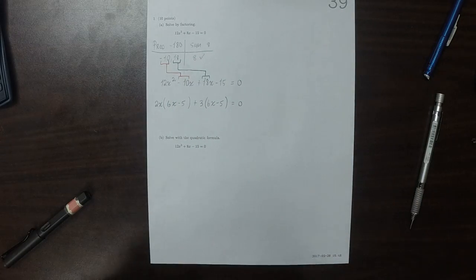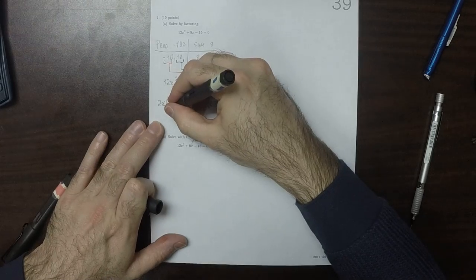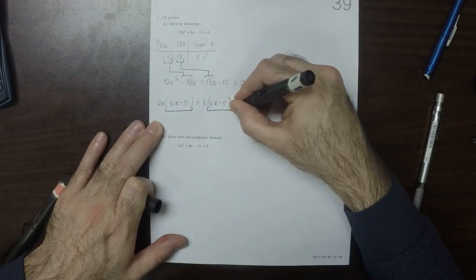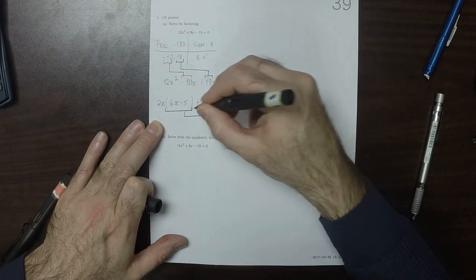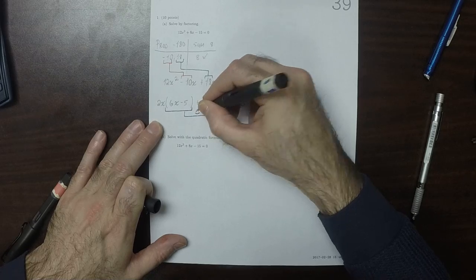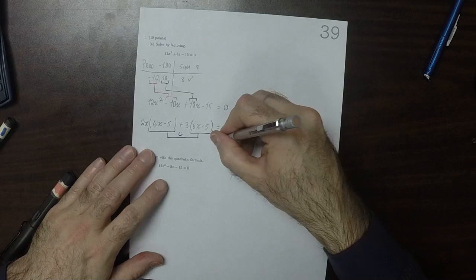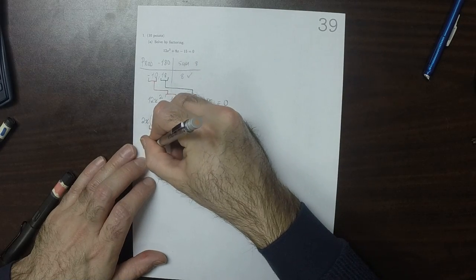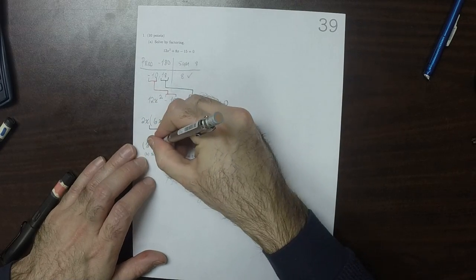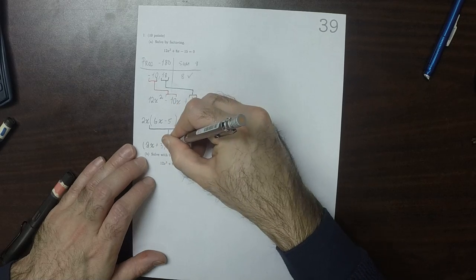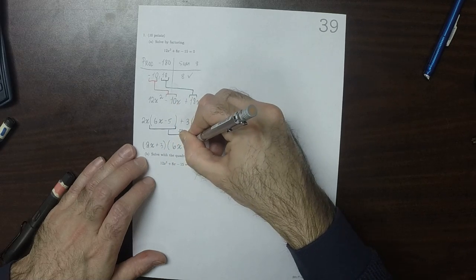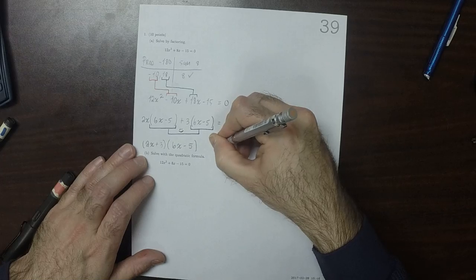So we can see that these two are the same. We're so happy about that. So that means that we can factor out 2x plus 3, and 6x minus 5, like so.